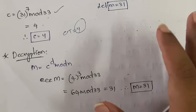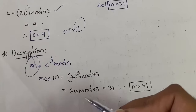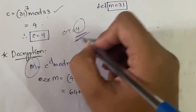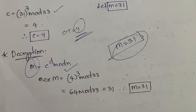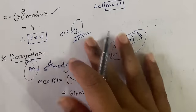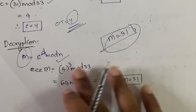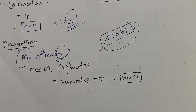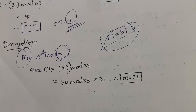For decryption, we use C = 4 and apply the formula m = c^d mod n. Substituting: m = 4^3 mod 33. We know d = 3 and n = 33. Computing 4^3 = 64, and 64 mod 33 = 31. We get m = 31, which matches our original assumed plaintext, confirming the process is correct. This completes the decryption process.